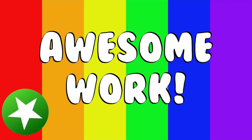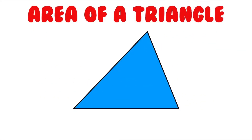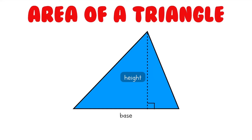Now we just have one more shape to learn how to find the area of, and it's a triangle. Finding the area of a triangle is a little different than finding the area of a rectangle or square, but it's not too tricky. There are two parts of triangles we need to know: the first is one of the sides, called the base, and the next is the height, which is an imaginary line that goes from the point opposite of the base all the way down to the base. Note that the height always makes a right angle with the base. You will often see the height of a triangle shown with a dotted line, just like this one.